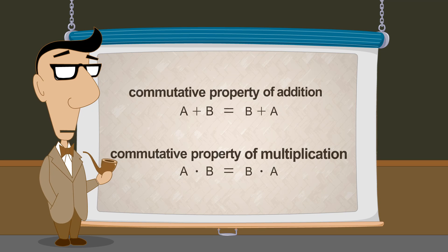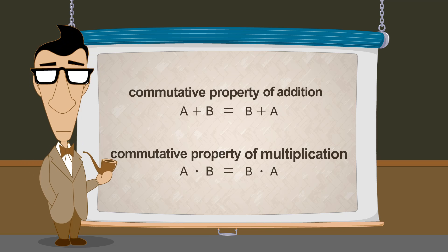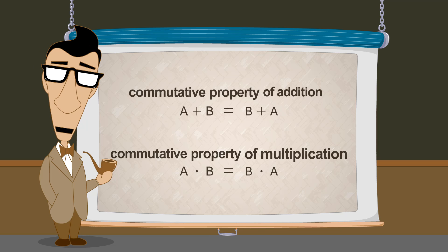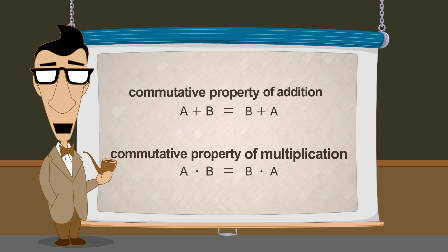Commutative properties are important algebraic tools that allow us to rearrange groups of numbers which are added or multiplied. In the next chapter we will discover several more properties which we will add to our tool chest of mathematical tricks.